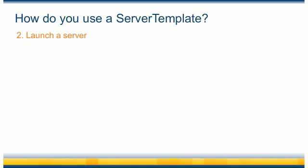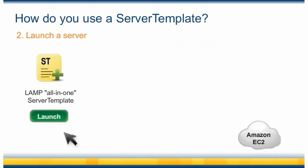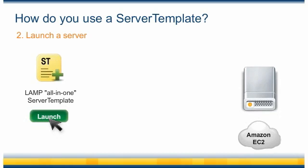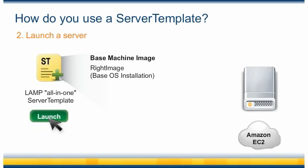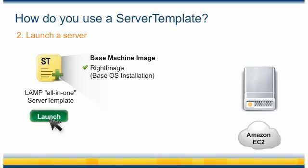So what happens when we launch a server using our LAMP server template? First, you request a server from your cloud infrastructure. In this case, we're launching a new server on Amazon EC2. Each server template starts with a base machine image, or AMI. This template uses one of our RightImages and installs CentOS as the base operating system.